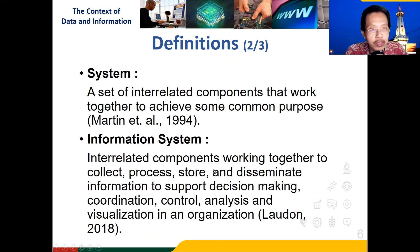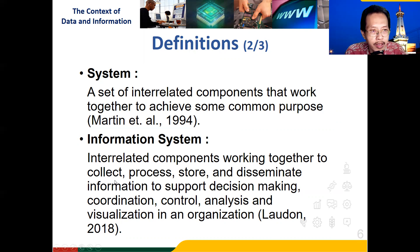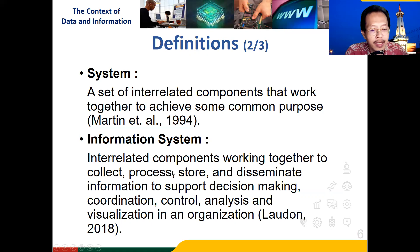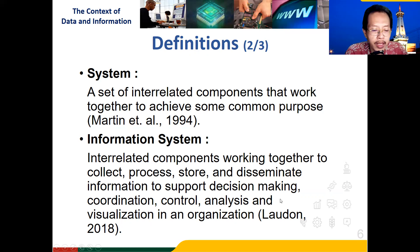But for an information system, those components might consist of hardware, software, database systems, operating systems, network systems, and so on — working together to collect data from the environment or from inside the company, put it into the database, and then do further processing in the information system. The database is used to store: first, data is collected, then data is stored into the database, then it could be processed. More processing would be done in the information system itself. Then in comes data outcomes — that's why information is disseminated to support decision-making. It could be for coordination, control, analysis, and visualization in an organization.